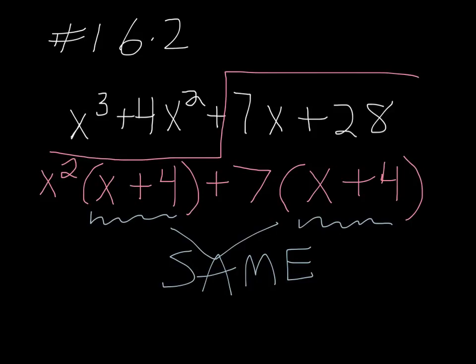So at this point, the two that are the same can be pulled out and you get x plus four, and then what's left over is the x squared plus seven.